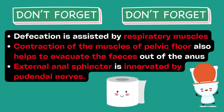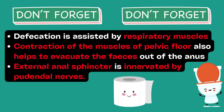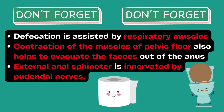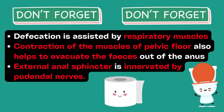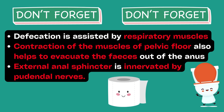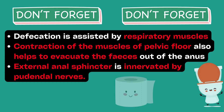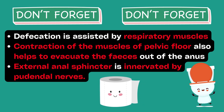There are some important additional points. In a normal healthy adult, defecation is assisted by respiratory muscles. Deep inspiration followed by closure of the glottis and contraction of the abdominal muscles raises intra-abdominal pressure, forcing contents down the colon. Contraction of the pelvic floor muscles also helps evacuate feces out of the anus. Importantly, the external anal sphincter is innervated by pudendal nerves, meaning defecation is under voluntary control except in infants. In a normal healthy adult, the external anal sphincter is normally closed; if it is not voluntarily relaxed, the defecation reflex dies out in a few minutes and does not recur for several hours.